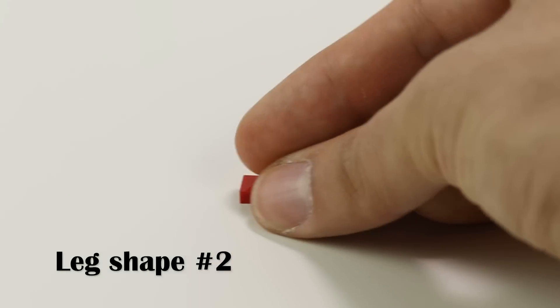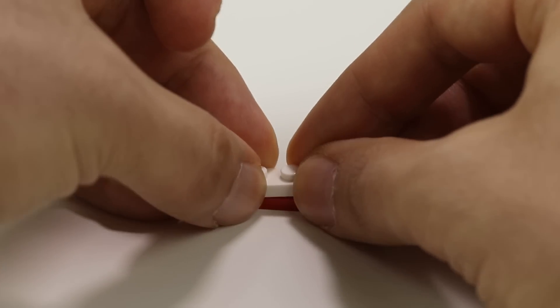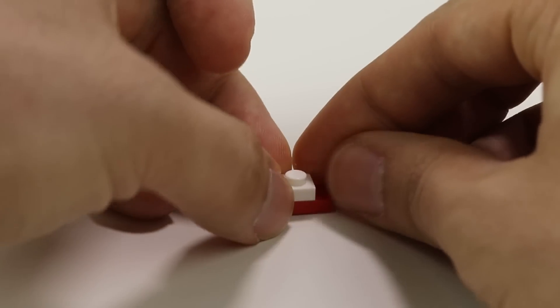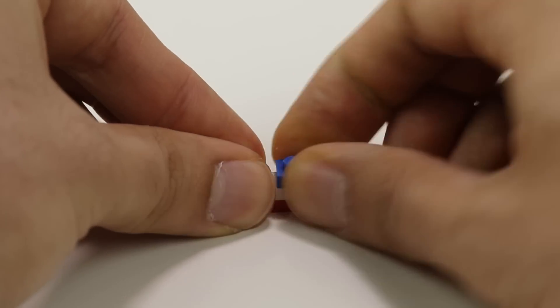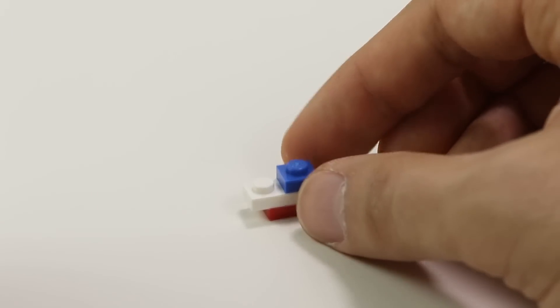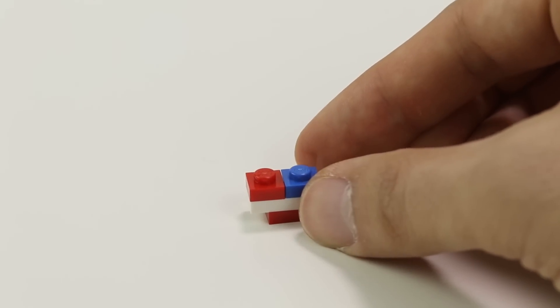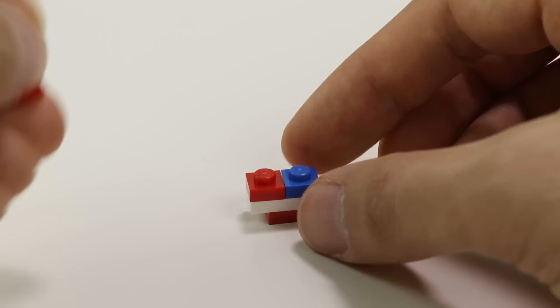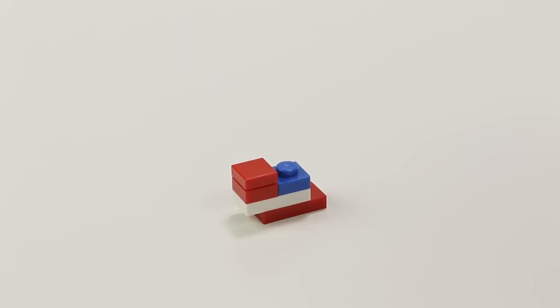Moving on to leg shape number two. We are again going to start with a 1x2 red offset plate. Going to add this time a white 1x2 plate to the top of it, offsetting them so that it's half of a stud offset. Then we're going to add a blue 1x1 plate and a red 1x1 plate, and on top of that a red 1x1 tile. That's the end of foot number one.